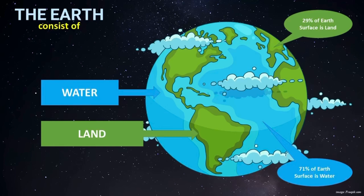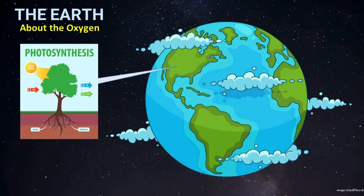This is Earth. Earth consists of water and land. 71% of Earth's surface is filled with water and the balance 29% is filled with land. Earth was formed 4.5 billion years ago and the first life appeared on Earth around 4.1 billion years ago. Humans need oxygen to breathe in and release carbon dioxide when breathing out, and humans get oxygen from plants through the photosynthesis process.